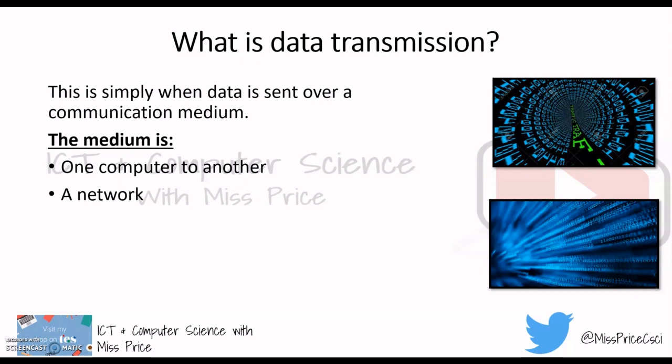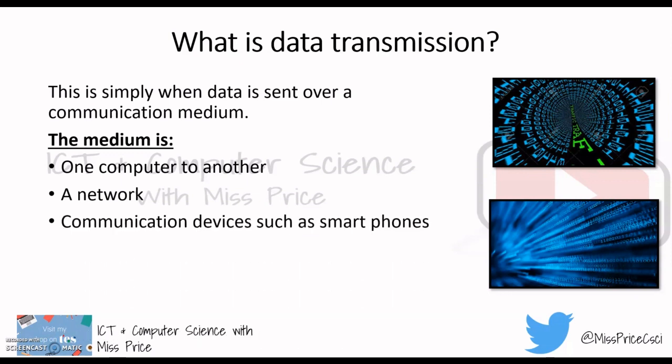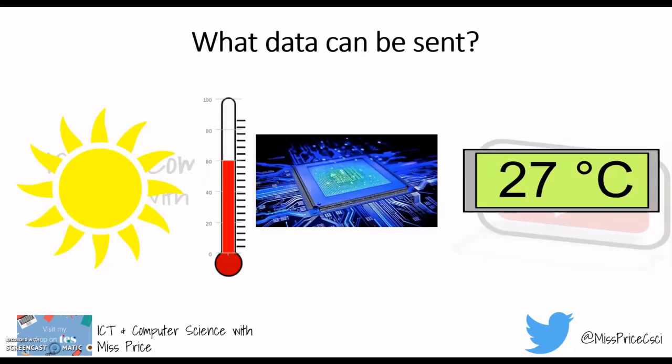Communication devices such as smartphones allow us to transmit data in several ways — for example Bluetooth connections, using messaging apps such as WhatsApp, and electronic devices such as Bluetooth devices, for example when you've got your phone or tablet connected to a speaker. Now, the data that can be sent is both analog and digital.